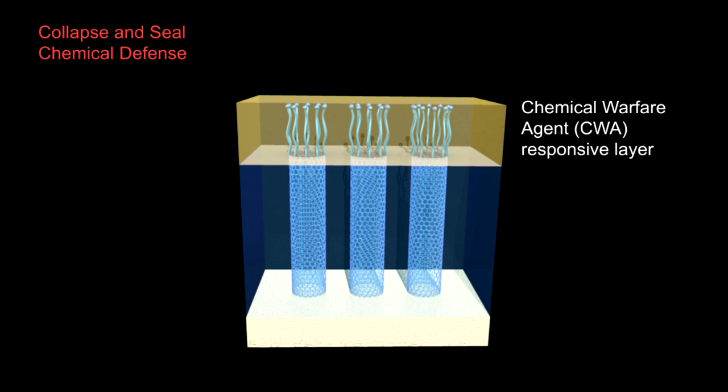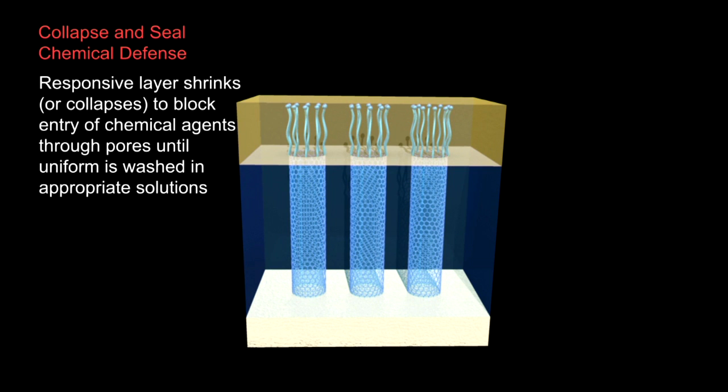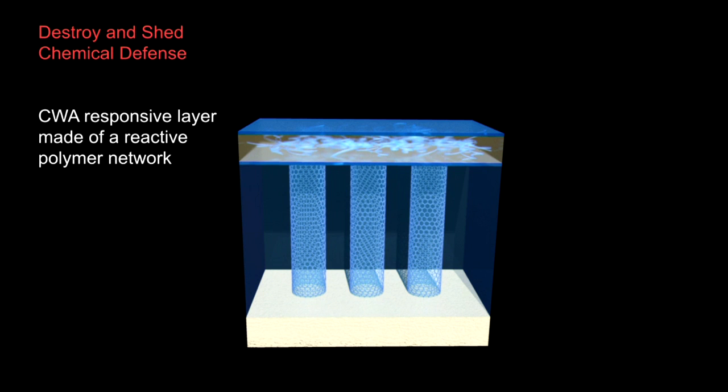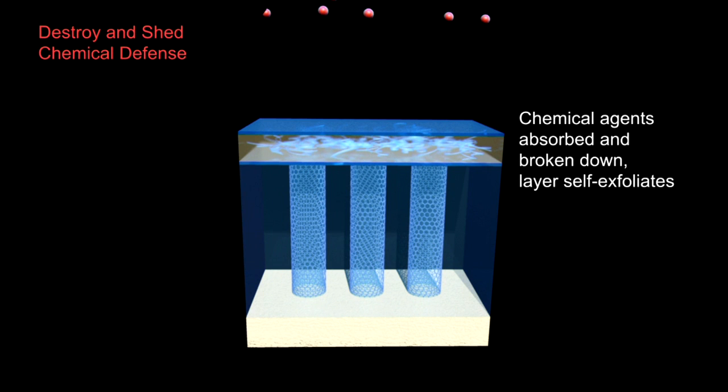We have a couple of different strategies in mind. One is a material that actually collapses in the presence of a threat and by doing so blocks the entrance of the pores and therefore blocks chemical warfare agents. The other concept is a material that actually destroys the threat and clears it off from the surface of the membrane.